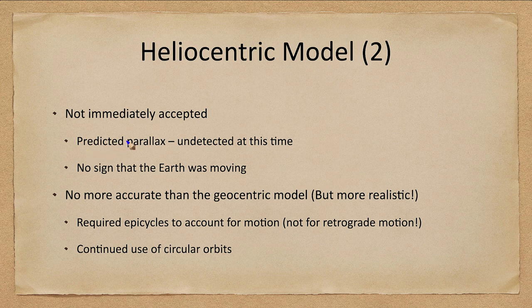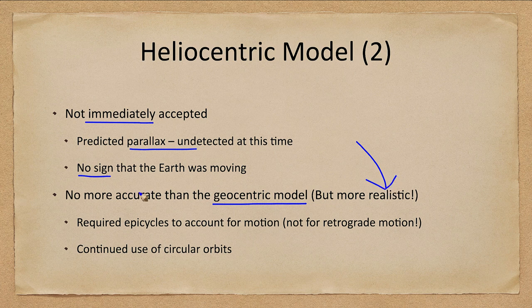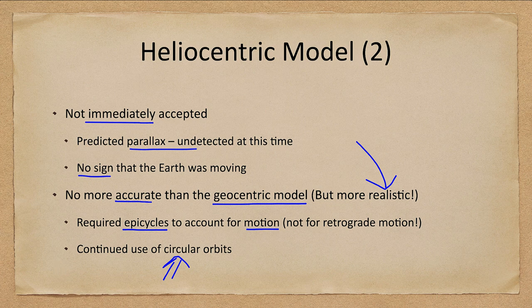Was the heliocentric model accepted? Certainly not immediately — it took a long time. First, it predicted parallax, which was undetected. There was also no sign that the Earth was moving when we go outside. It was also no more accurate than the geocentric model in predicting positions, and it still required some epicycles to account for the motion because of the use of circular orbits.